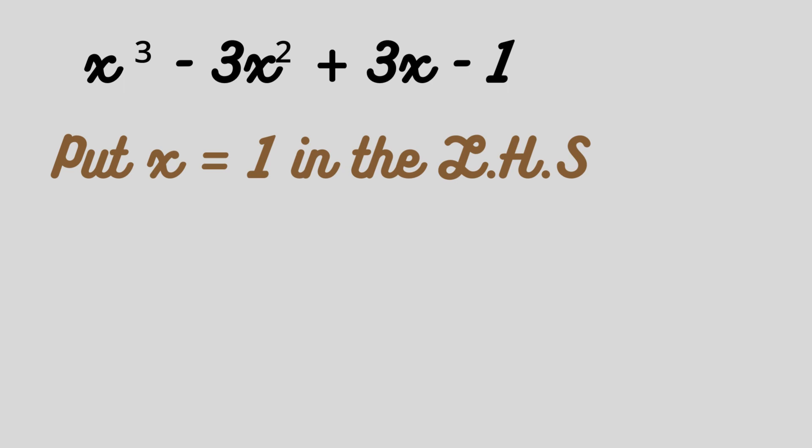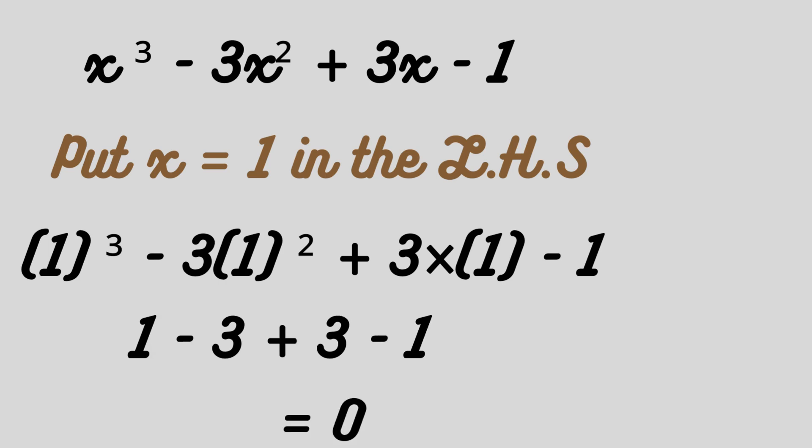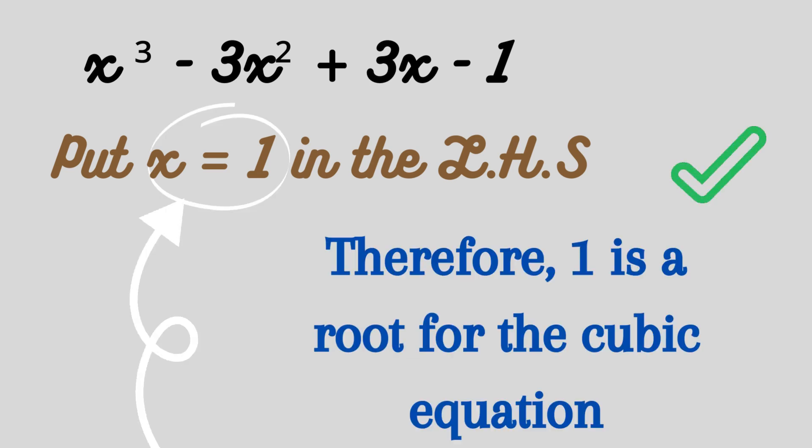Now let's try x = 1. Putting 1 in place of x: 1³ - 3(1²) + 3(1) - 1 = 1 - 3 + 3 - 1 = 0. We got zero, and hence x = 1 is a root of this cubic equation.